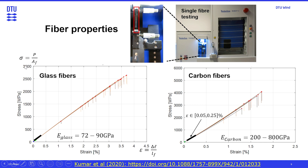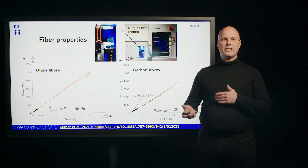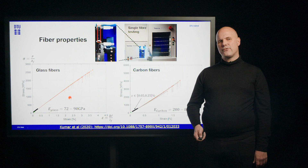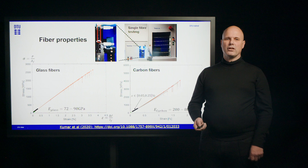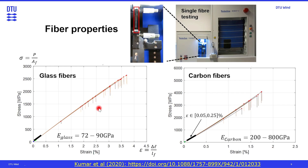The strain is given by the elongation movement of one of the clamps relative to the gauge length. This is very brittle behavior, where failure can occur at many different locations, and failure is actually driven by flaws on the fiber. If there are large flaws, they grow faster and make the fiber fail earlier. This also means the strength of the fiber depends on how long a fiber we are testing. However, the stiffness of the fiber is rather well defined.